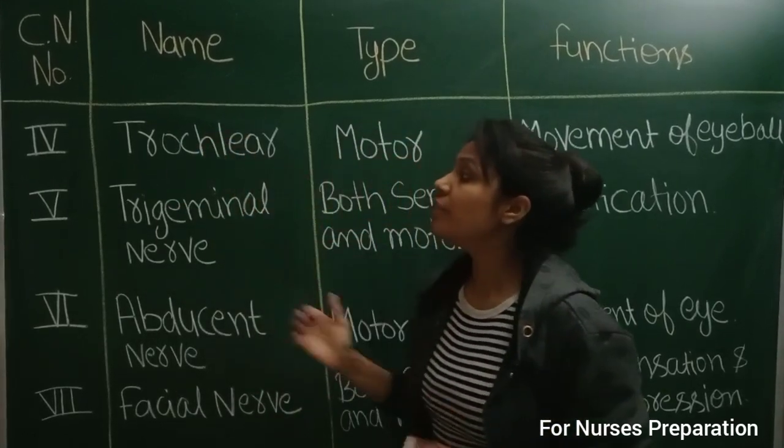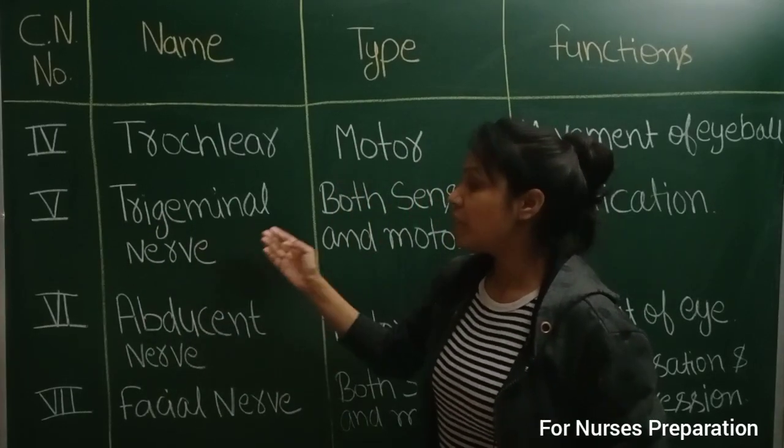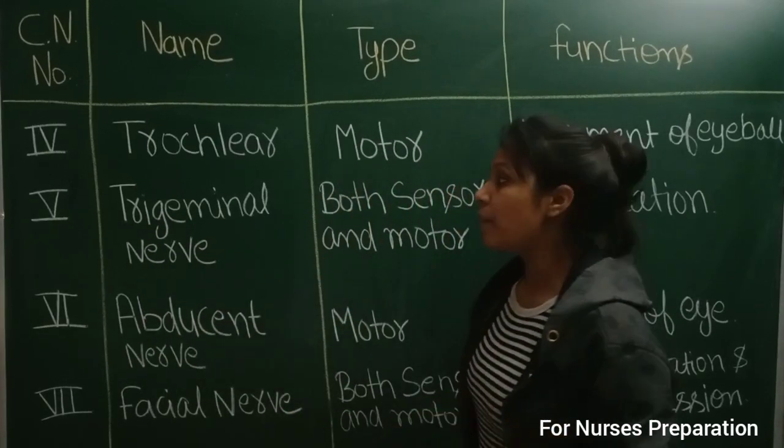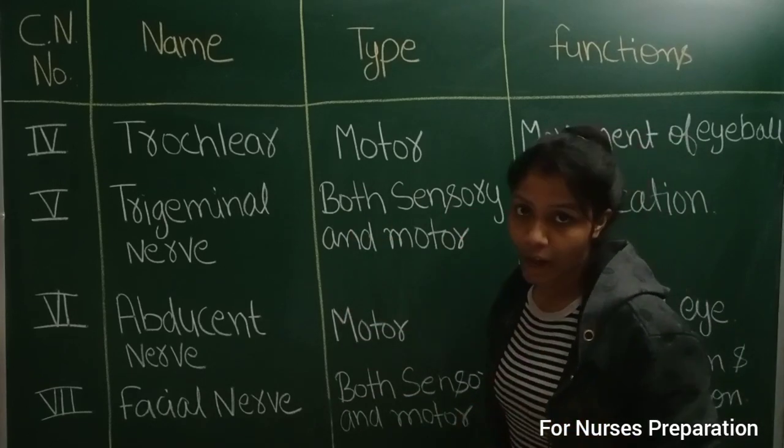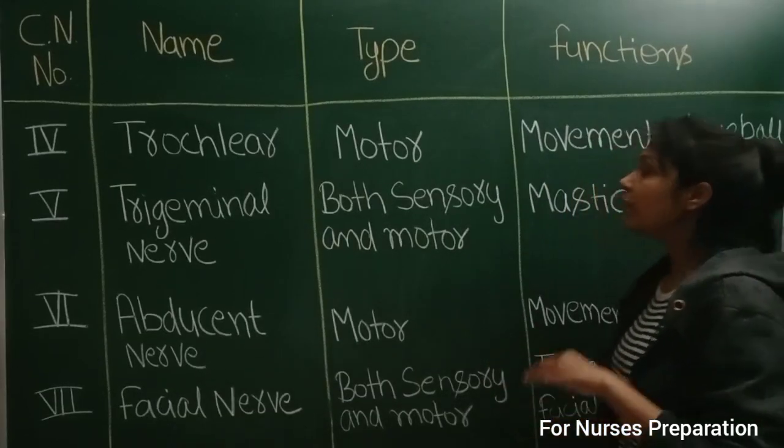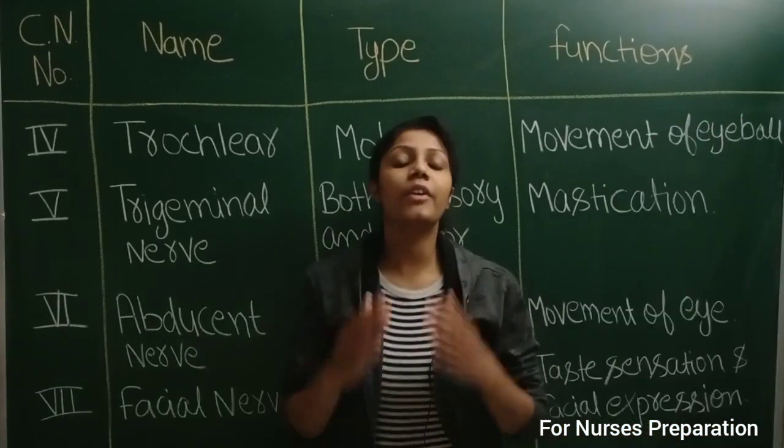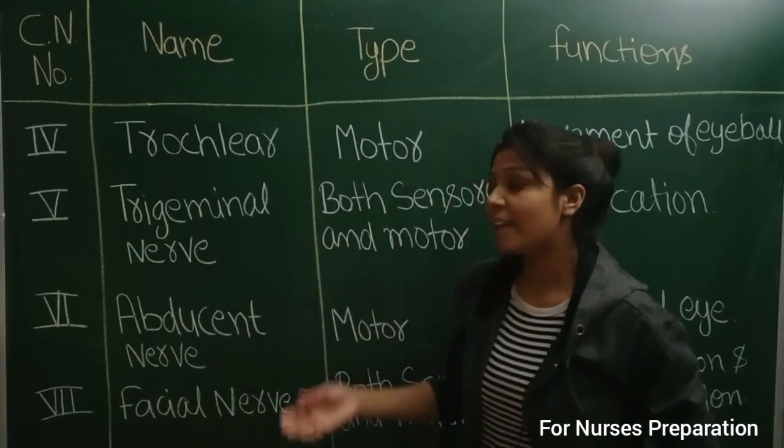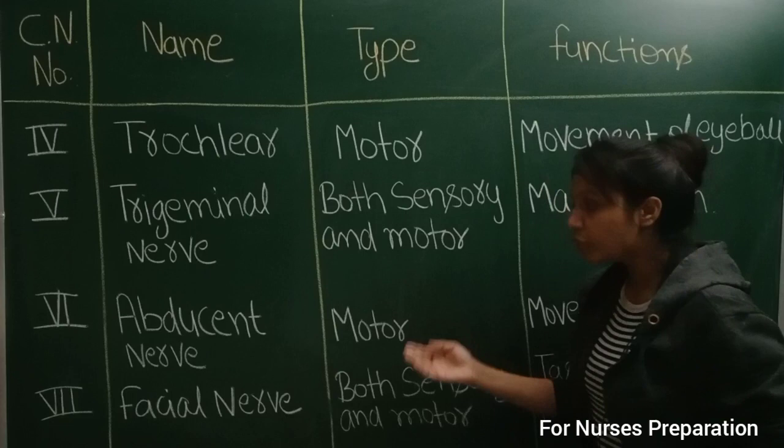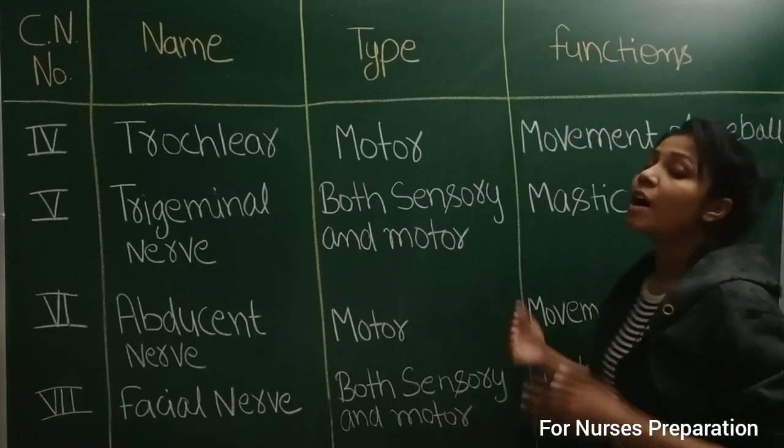That is cranial nerve number five which is trigeminal nerve and its type is both sensory and motor and their function is mastication. Cranial nerve number six is abducent nerve and its type is motor and its function is movement of eye.